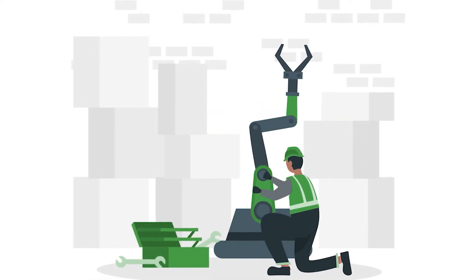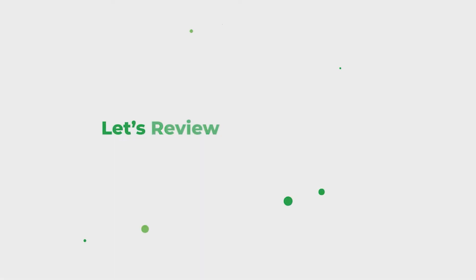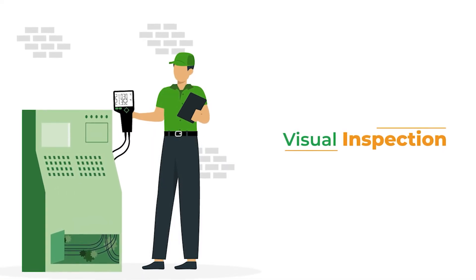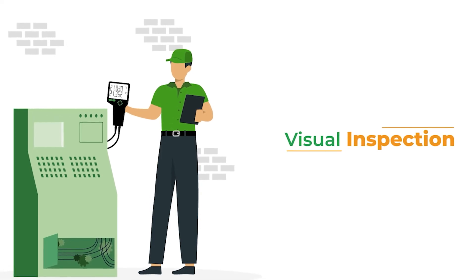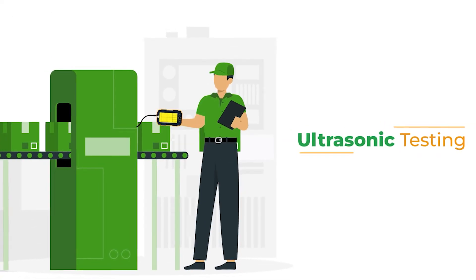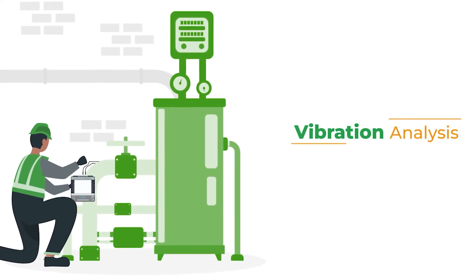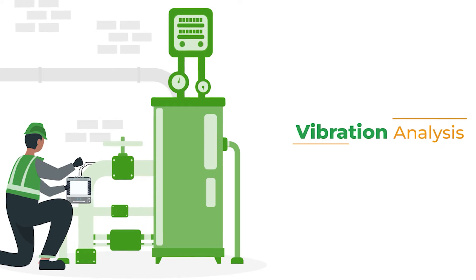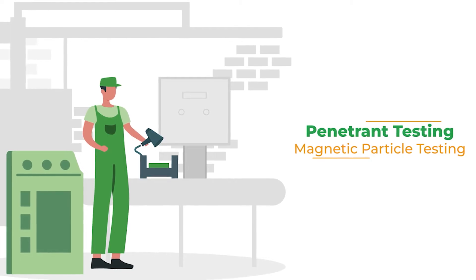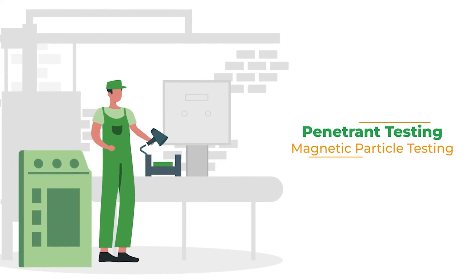A wide range of industries use non-destructive testing due to the versatility and variety of testing methods. Let's review some of the most commonly used methods. Visual inspections are when equipment is inspected visually, sometimes with robots or drones fitted with cameras to assess their condition. Ultrasonic testing passes sound waves through a component to detect flaws and determine measurements. Vibration analysis measures vibration signatures to identify faults or abnormalities in rotating parts. Penetrant or magnetic particle testing is when liquids or magnetic particles are applied to a component where they gather near defects and cracks to highlight faults.